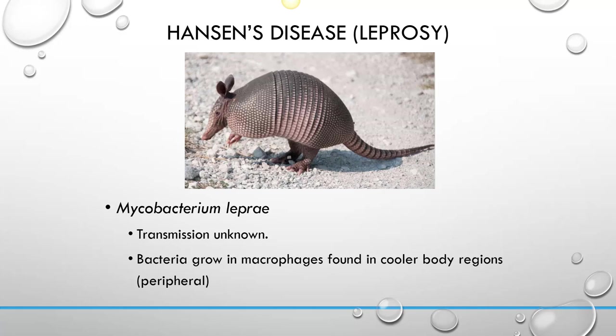Hansen's disease is the new name for leprosy. Leprosy has a lot of negative connotations, particularly in certain religious groups — you may have heard of leper colonies. Leprosy is a disease that causes disfigurement and nervous system damage. The disfigurement is often found in the colder regions of the body: the tips of the fingers, toes, nose, and ears, because this microorganism likes to replicate inside of macrophages found in those areas.